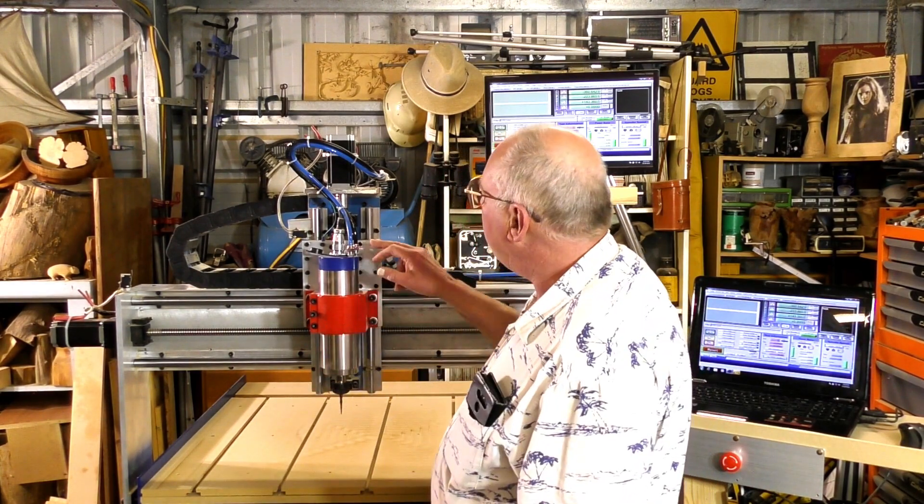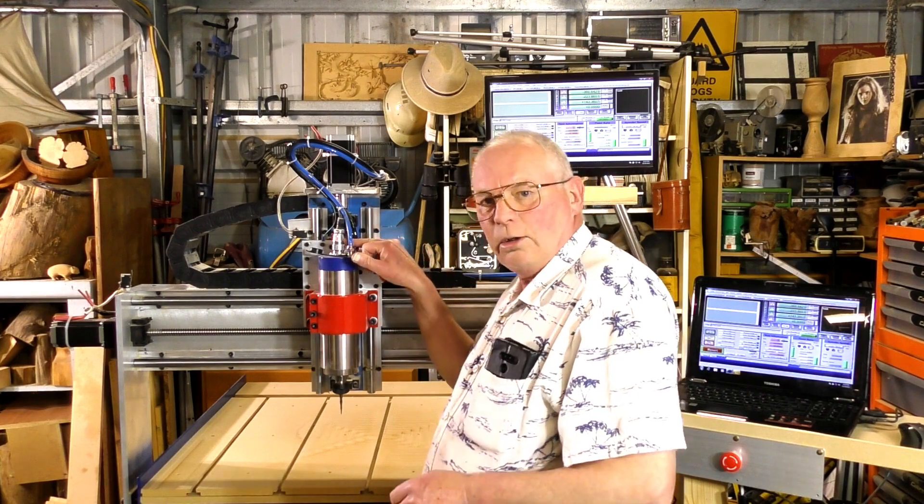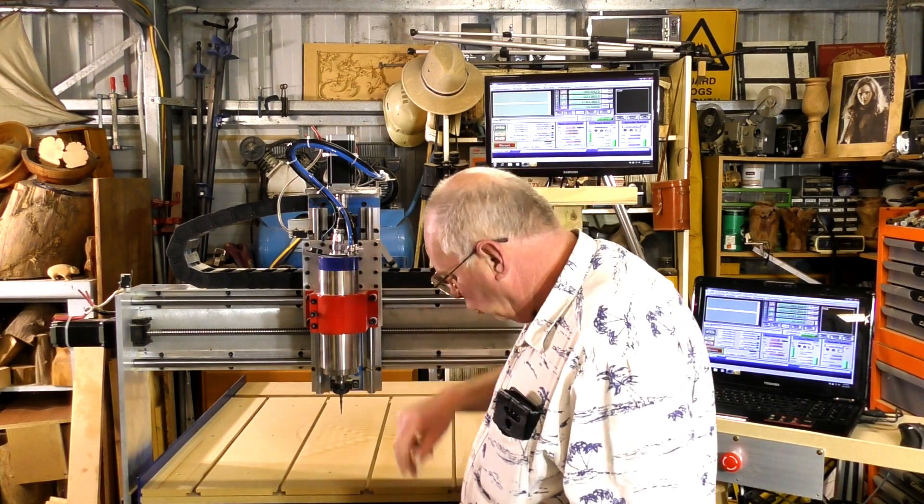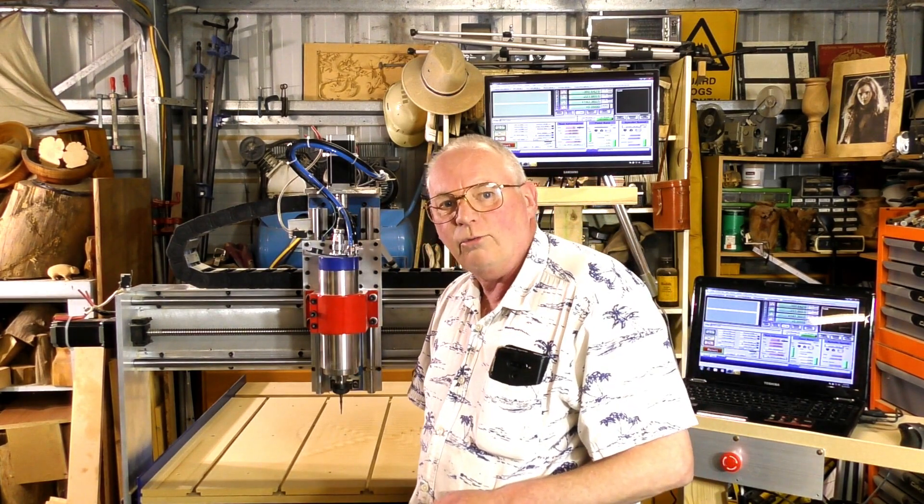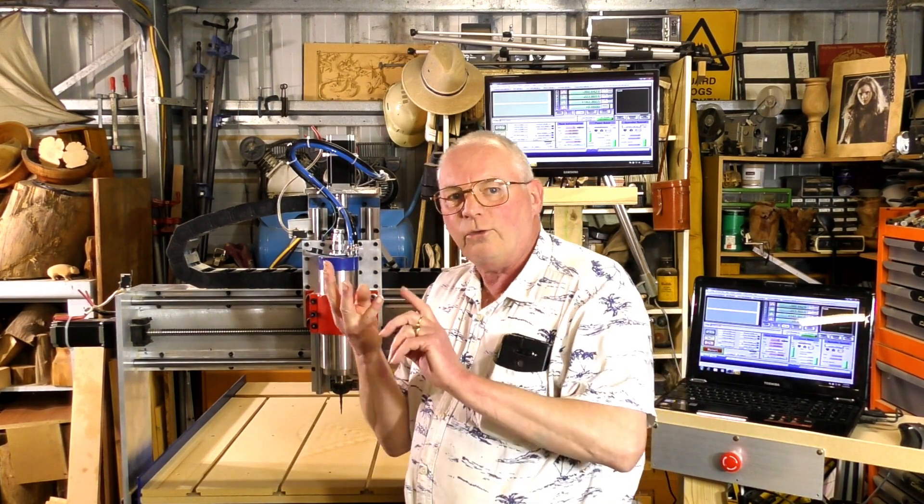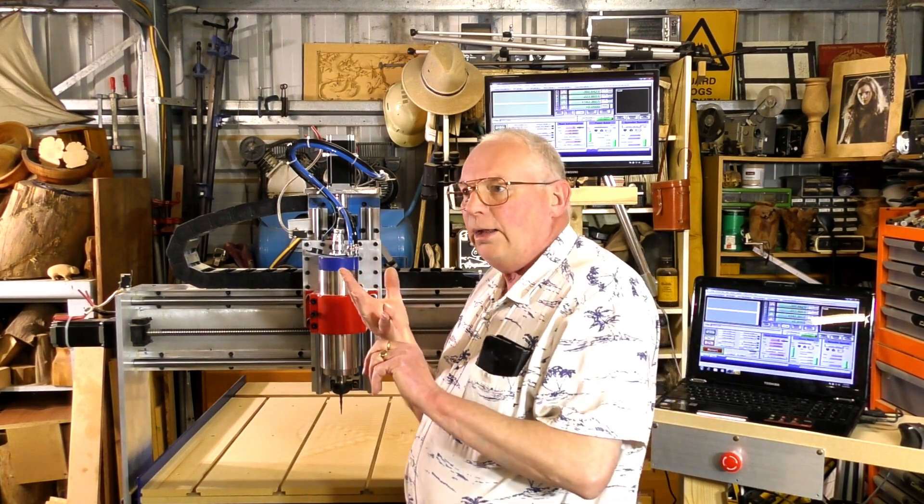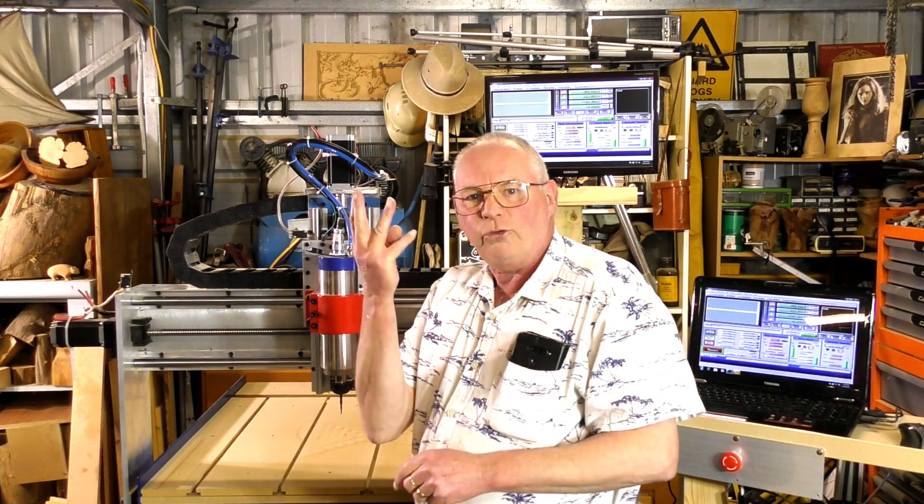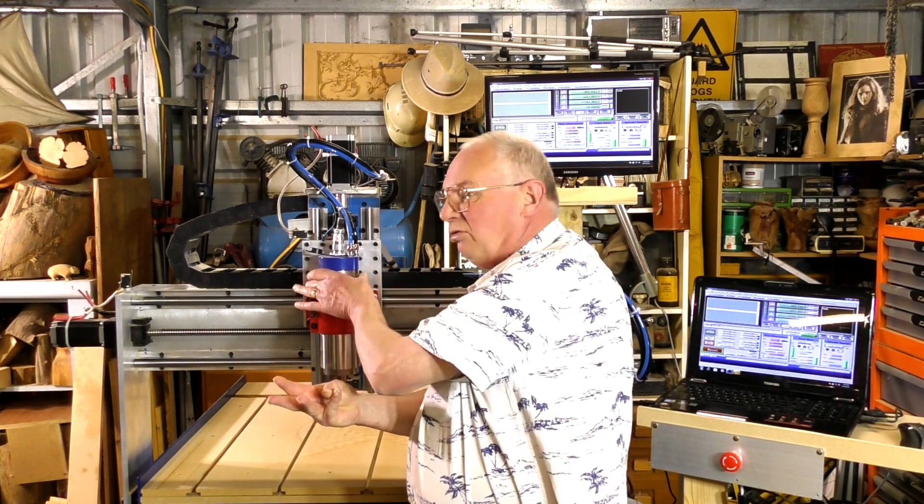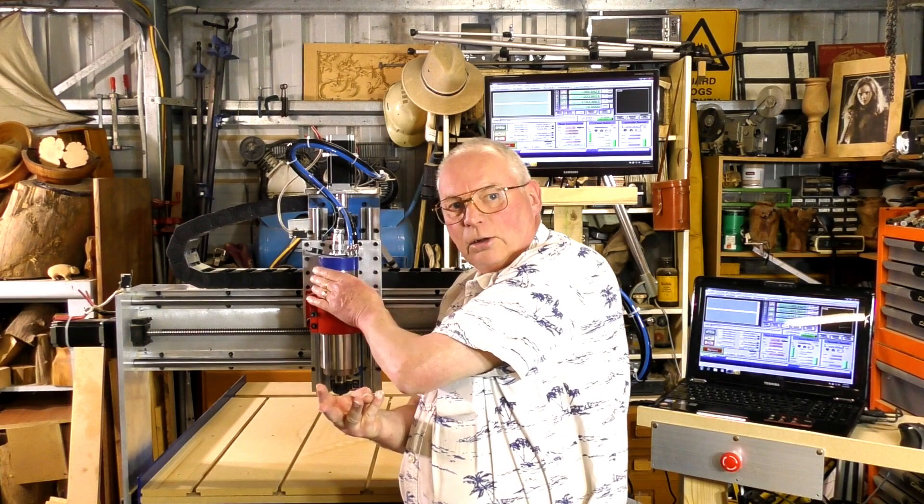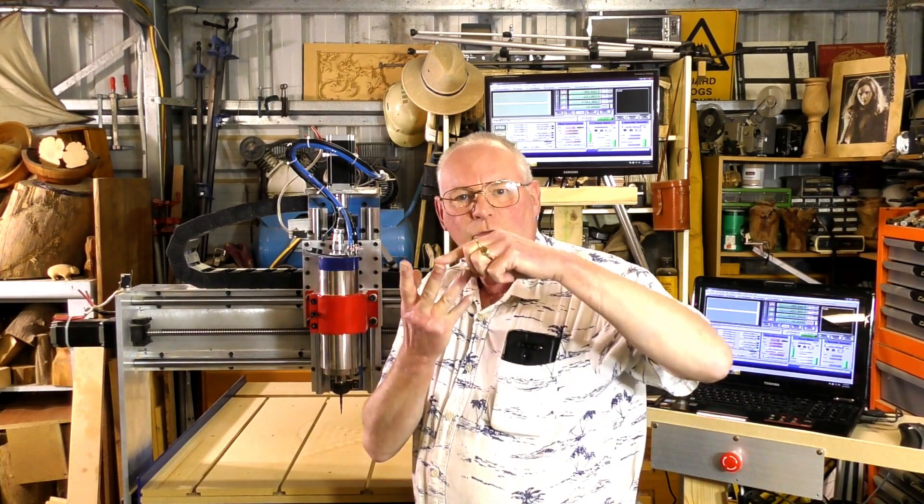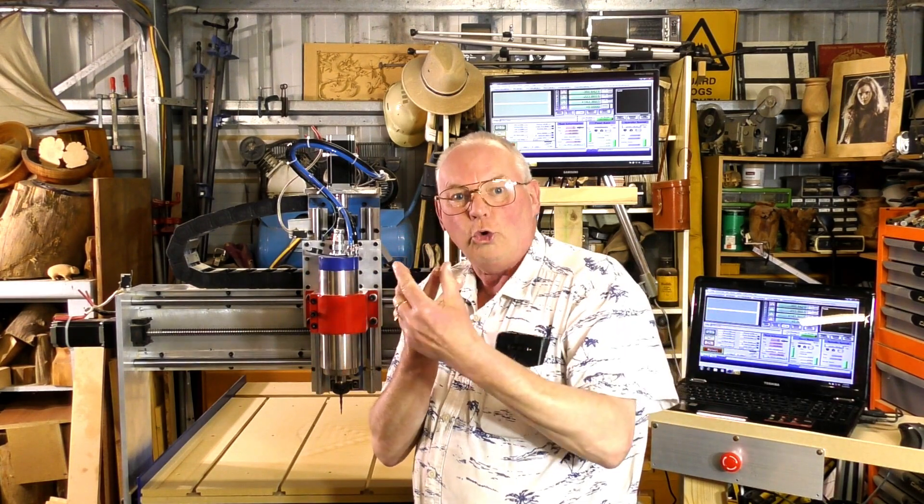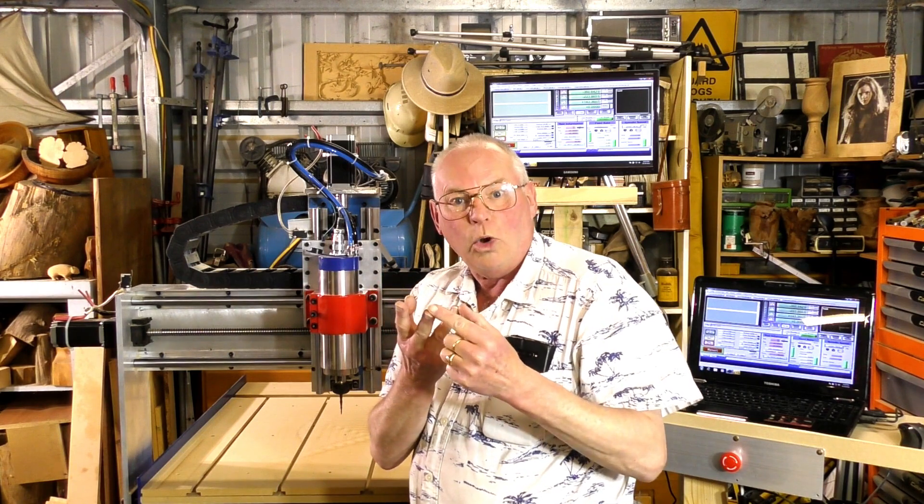Now, you can either change the wires up here, or the wires on the VFD. There are four wires. There's an earth, and there's three poles of the three-phase spindle. Change any two of the pole wires.